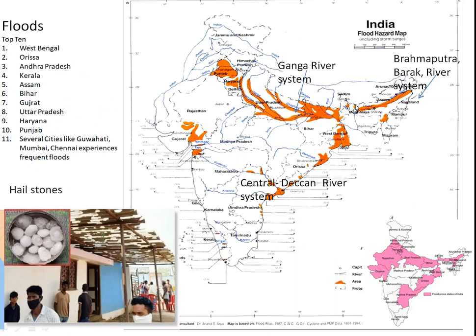This flood hazards map highlights the Ganga plains and Brahmaputra river valleys as especially flood-prone lowland areas. Chennai has also experienced floods during winter, as it receives rainfall twice a year from the Coromandel Coast. Kerala has also faced severe flooding — last year it was a havoc. Hailstones often accompany rainfall, damaging crops and property.